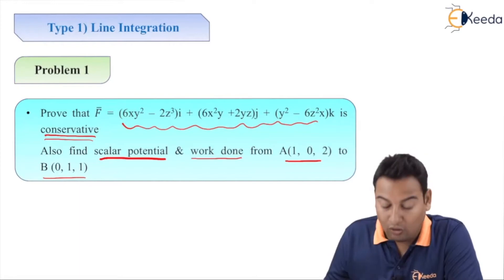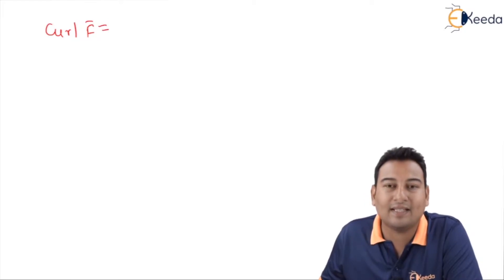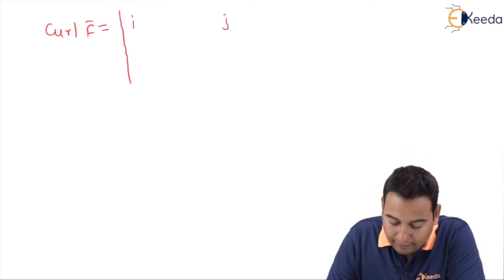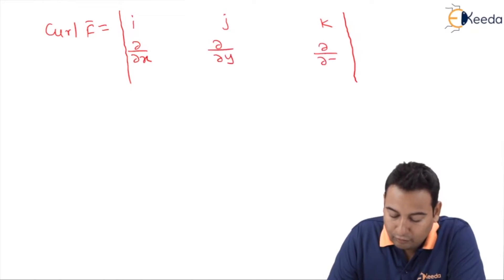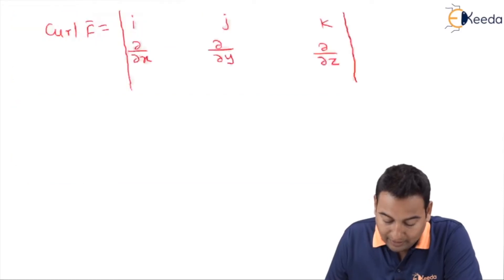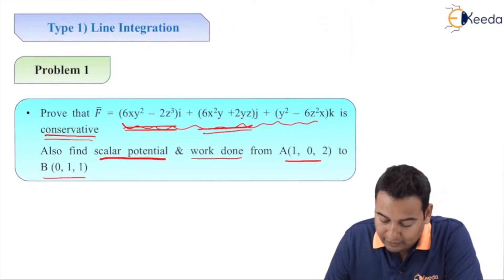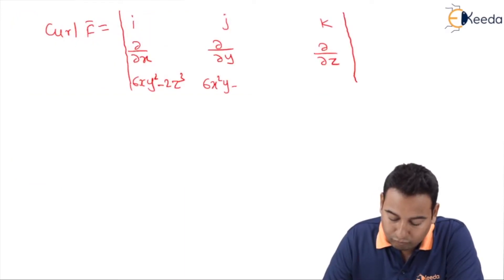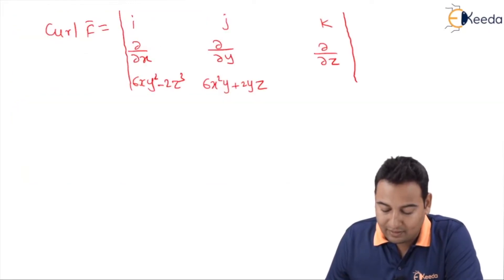For part one, we need to check whether the vector is conservative or not. Conservative (or irrotational) means curl of F̄ should be zero. Let me find curl of F̄. Setting up the determinant: i, j, k in the first row; ∂/∂x, ∂/∂y, ∂/∂z in the second row; and the components (6xy² − 2z³), (6x²y + 2yz), (y² − 6z²x) in the third row.